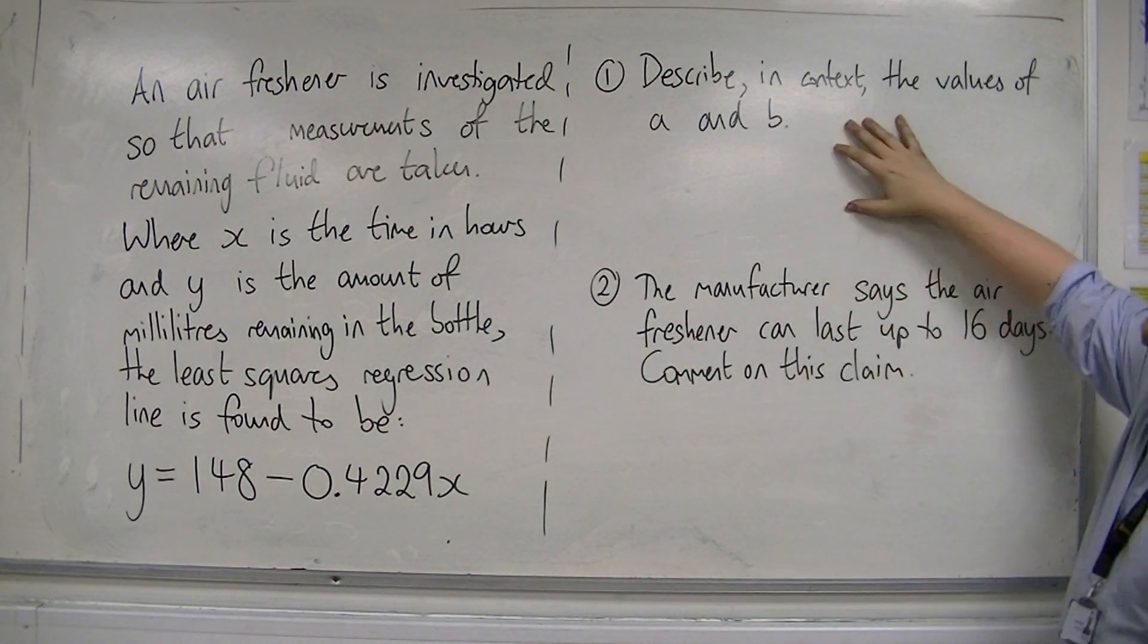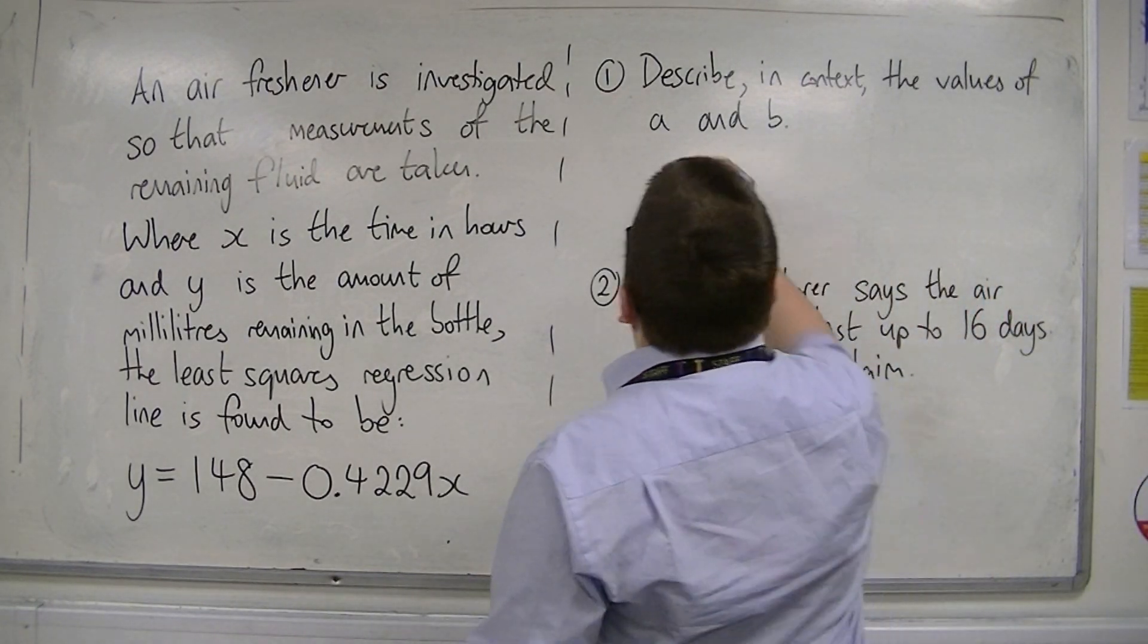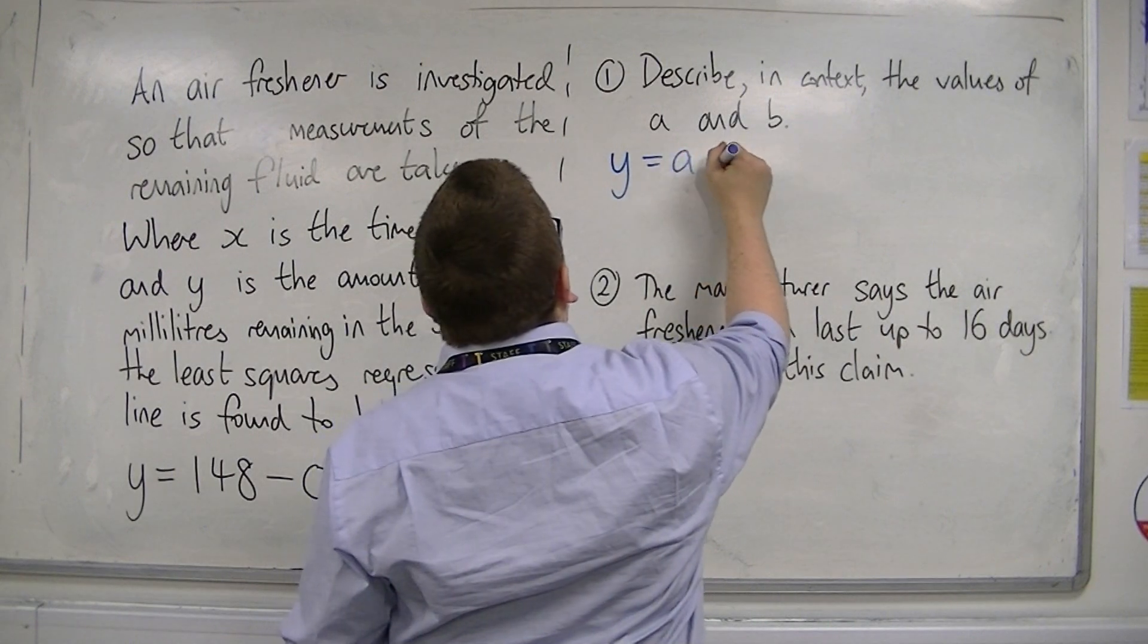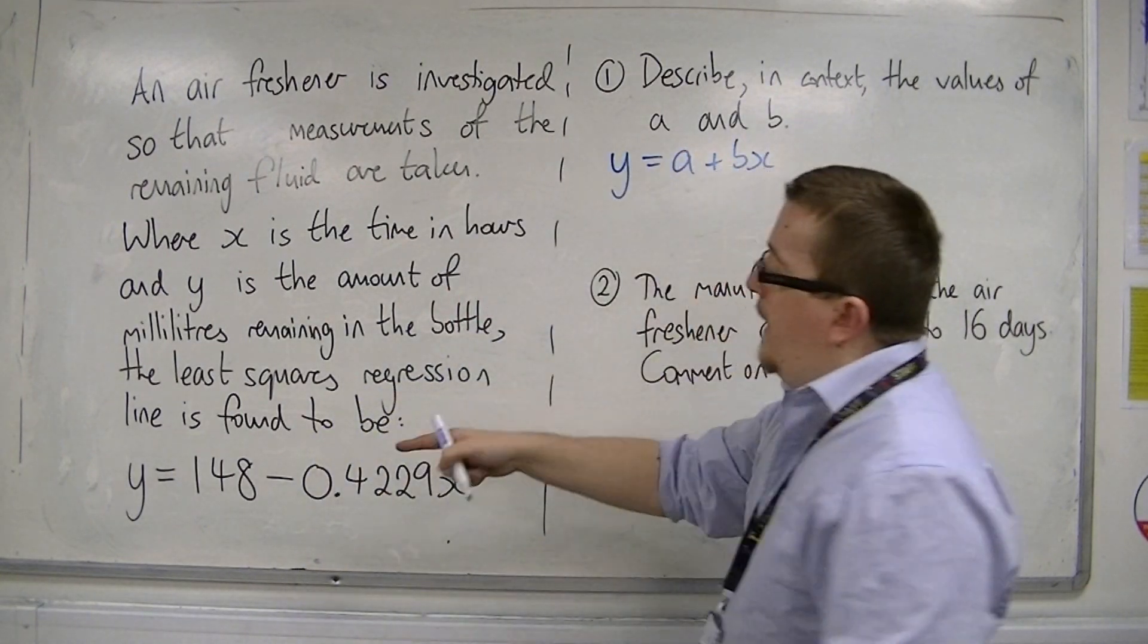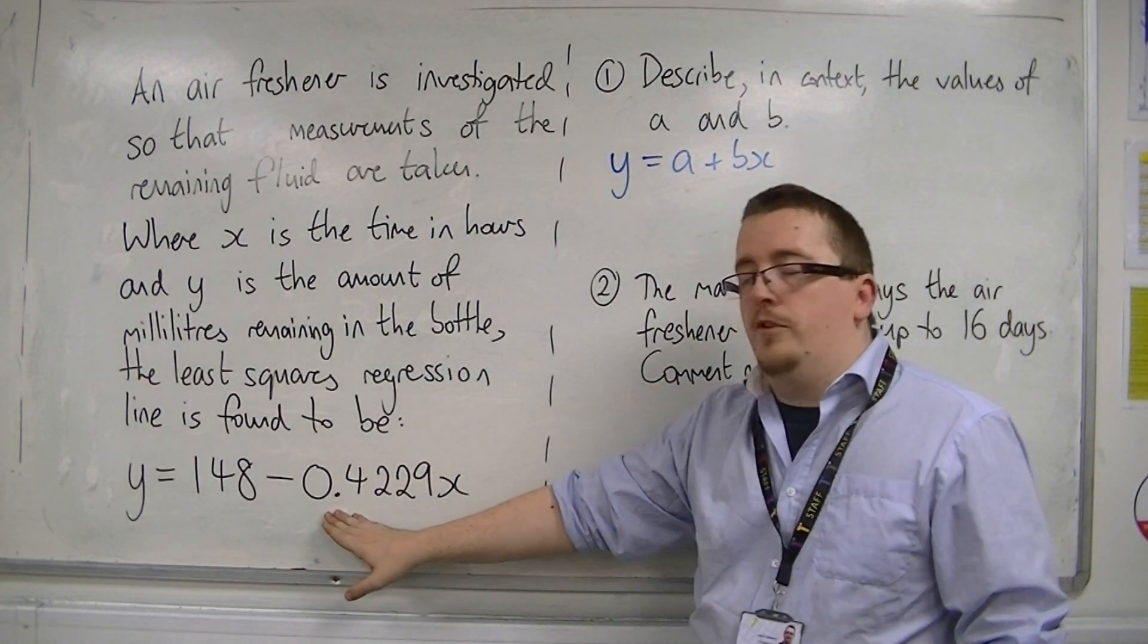First of all, we're asked to describe in context the values of a and b. So remember, the values of a and b that we're thinking about is y = a + bx. So a is the value of 148 and b is the value of -0.4229.